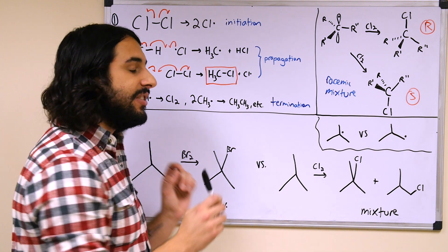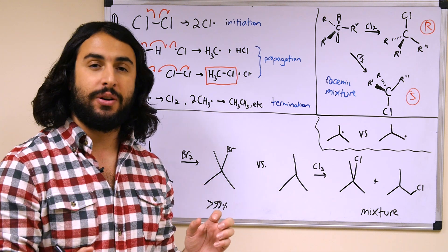Number one, we want to understand the difference in the stability between the bromine radical and the chlorine radical. Just as alkyl radicals follow alkyl cation stability, halogen radicals also follow halogen anion stability trends.